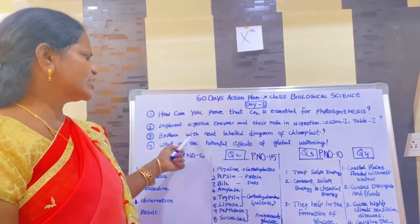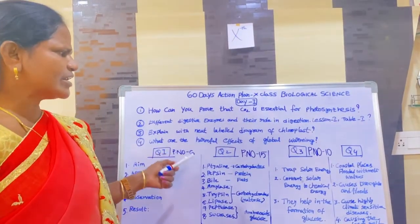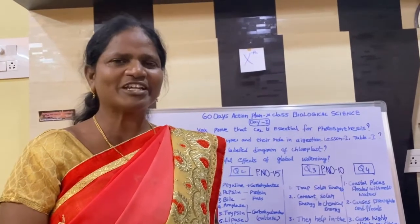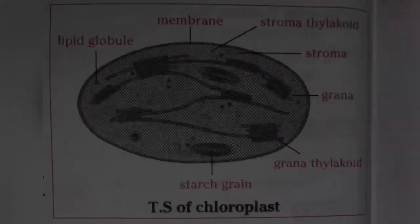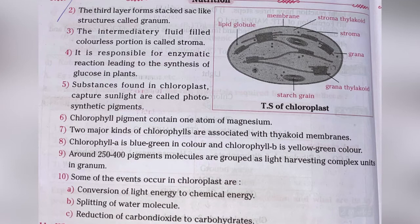Third question: explain with a neat labelled diagram of chloroplast. Chloroplast is given at page number 10. Chloroplast is a membranous structure consisting of three membranes. The third layer forms stacked sac-like structures called granum. The intermediary fluid-filled colorless portion is called stroma, which is responsible for enzymatic reactions leading to the synthesis of glucose in plants.